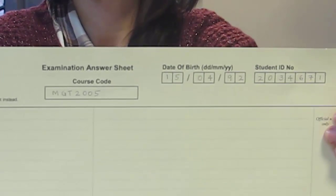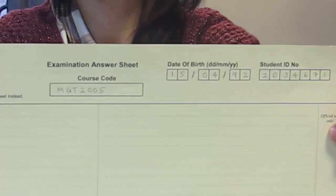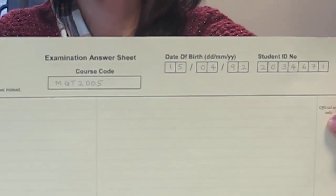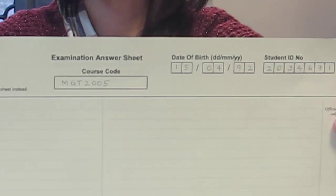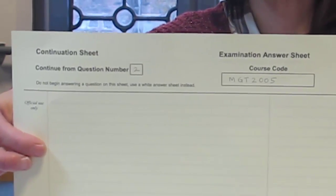Do not use another white sheet. The yellow continuation sheet should be completed at the top with your student ID, date of birth, question number, and the course code. Please complete it in the same manner as the white answer sheet.